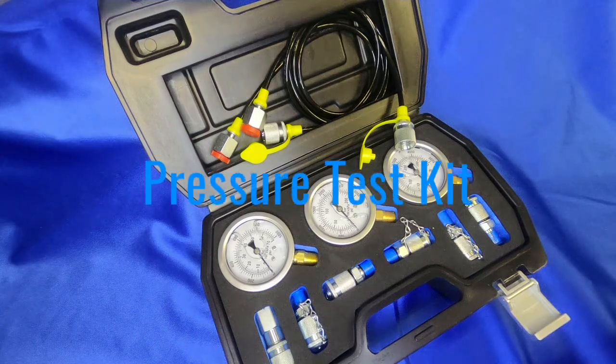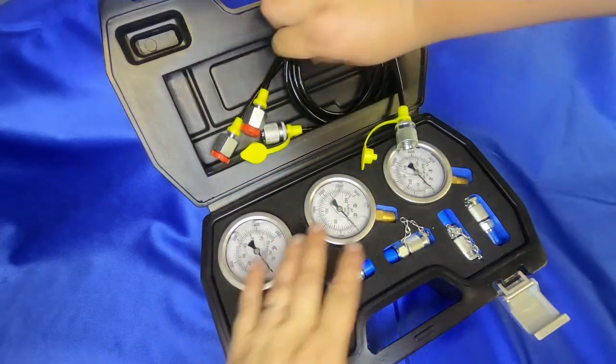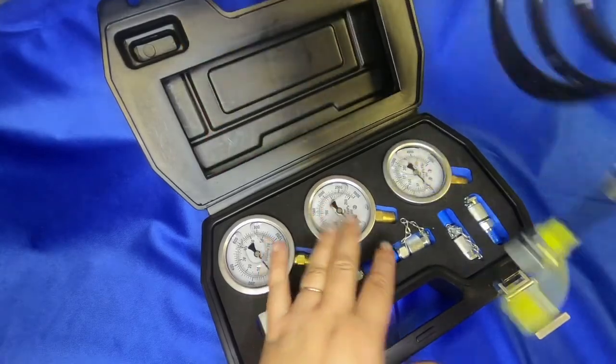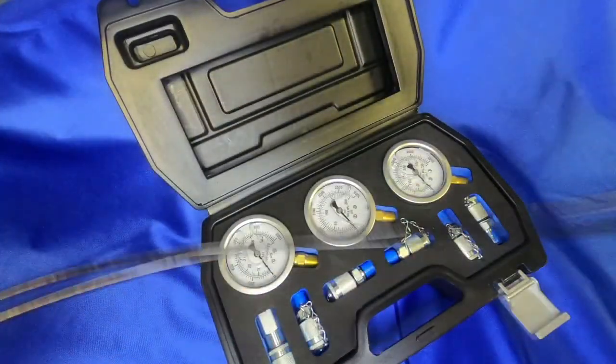Here we have a pressure test kit. It comes with two micro-bore hose assemblies, both of them 40 inches long.